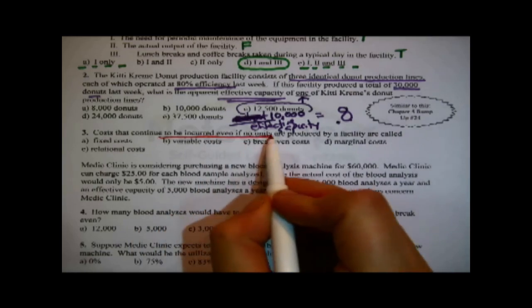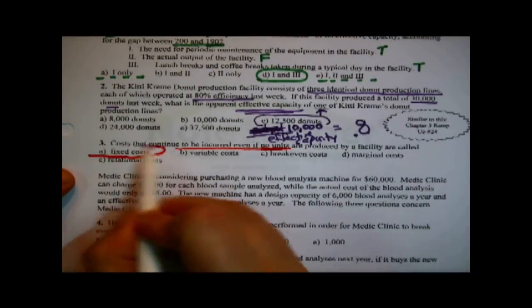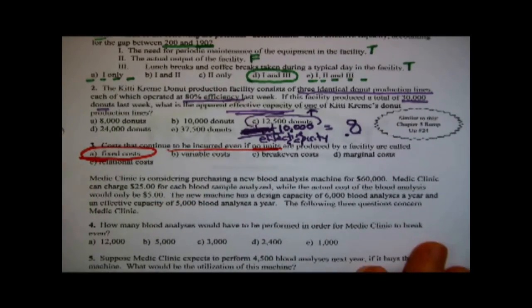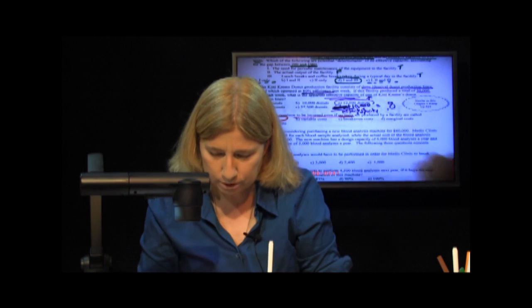Now the third question — it's easy, we're going back to qualitative. Costs that continue to be incurred even if no units are produced by a facility are called — it's probably been in a dozen classes you've taken — fixed costs. These are costs you have to pay regardless of whether you did anything with what you were paying for or not.